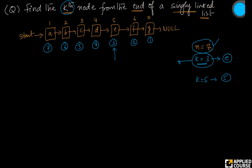Going in reverse order, the third node from the end — what is that? If I know n, it is going to be the (n minus k plus 1)th node from the beginning. The kth node from the end is the (n minus k plus 1)th node from the beginning. Here n equals 7 and k equals 3, so 7 minus 3 plus 1 equals 5. The third node from the end is the fifth node from the beginning.